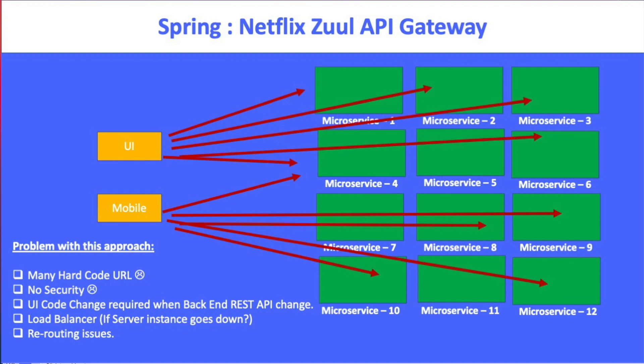There is also a load balancing issue. Suppose you want to make two instances of any microservice - you have to take care of that manually. And there's also the routing issue. Suppose today you want to route one IP address for one REST API to a different REST API - you cannot do that, because of the tight coupling. So what is the solution?